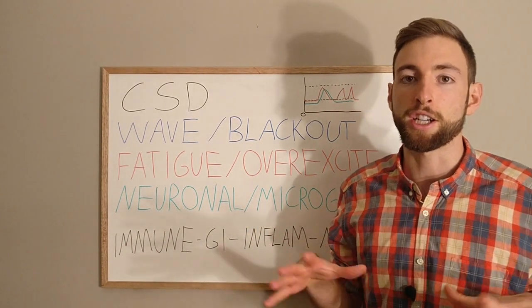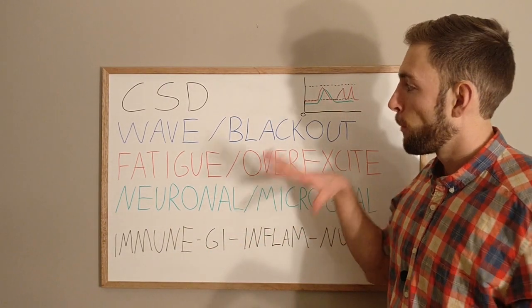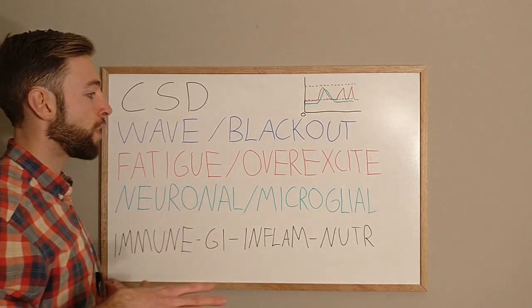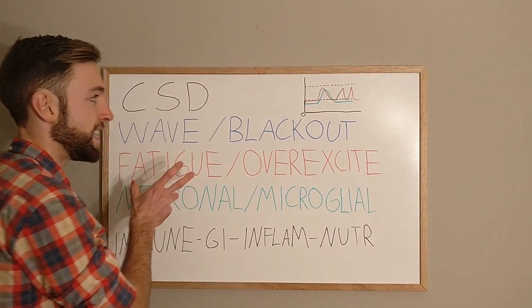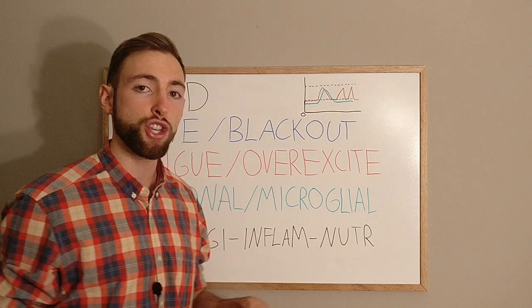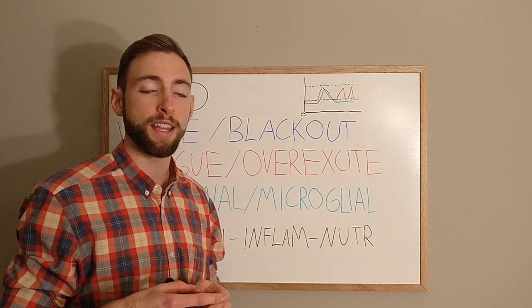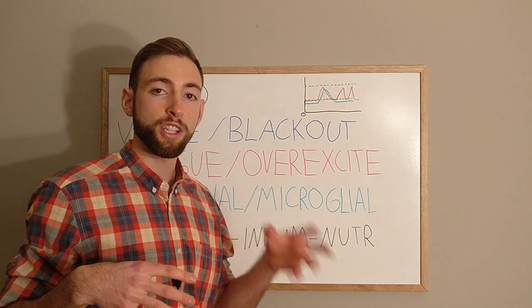And so what's happening here is that our neurons are being fatigued or they're being overexcited and then they're being fatigued because of this overexcitation and a breakdown in the energy generation of our neurons and the breakdown in the inflammatory signaling of our neuron support cells,